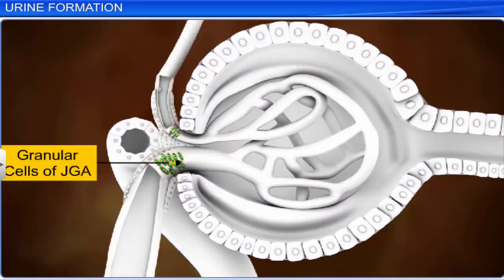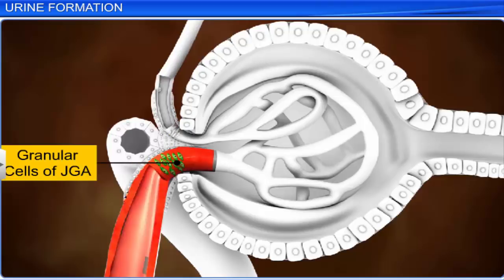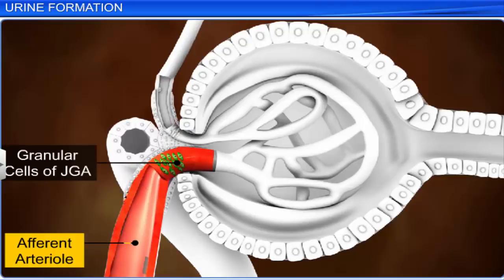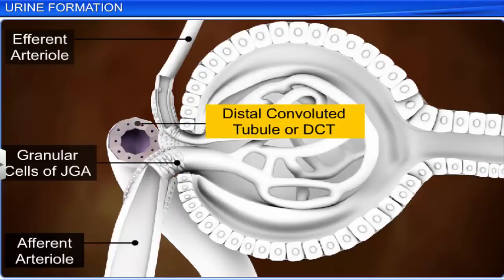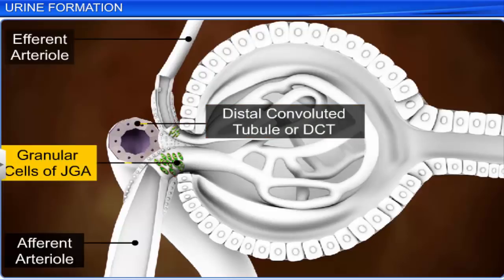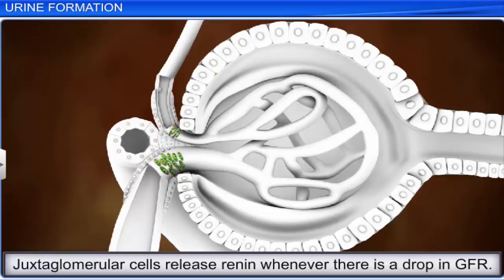The juxtaglomerular apparatus, or JGA, is one such microscopic structure that regulates the GFR. The JGA is formed by cellular modifications between the afferent arteriole and the distal convoluted tubule (DCT) of the same nephron, at their point of contact. The juxtaglomerular cells release renin whenever there is a drop in the GFR, which stimulates glomerular blood flow and normalizes the GFR.